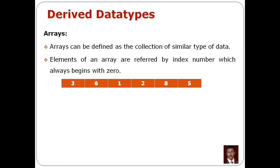If we refer to the array by index number, it starts with 0, 1, 2, 3, 4, 5 — like this. So if we refer to the array at index 0, the first value is there, and if we refer to the array of size, it is 6.